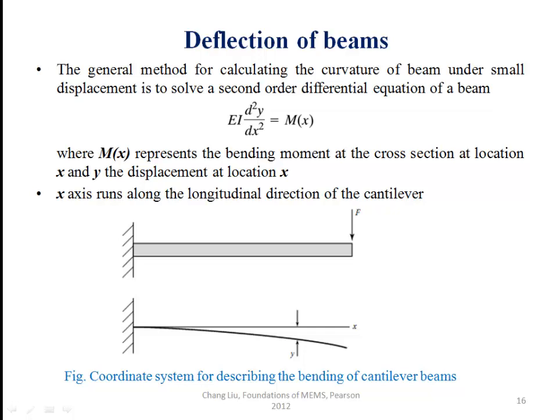The beam second order differential equation is EI times d²y/dx² equals M(x), where M(x) is the bending moment at location x, and y is the displacement at point x.